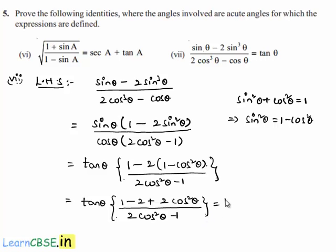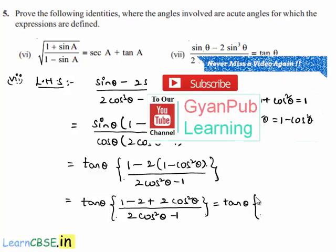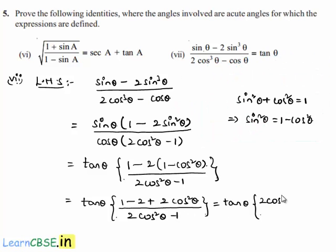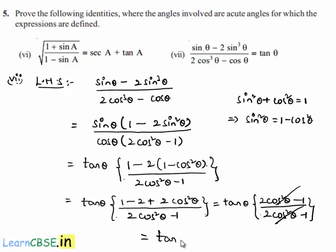In the numerator and denominator we have (2cos²θ - 1) as a common factor, which cancels, and finally we are left with tan θ, which is our right hand side.